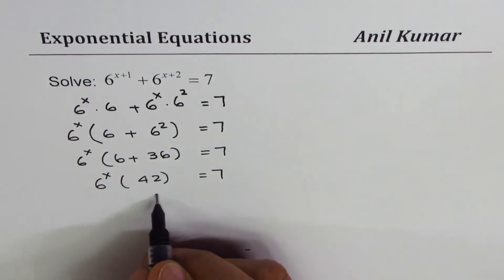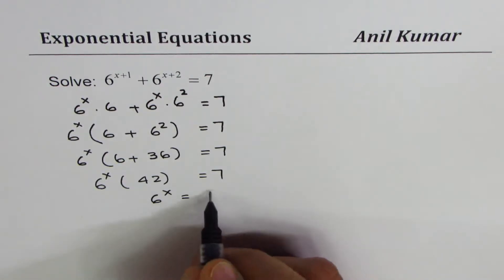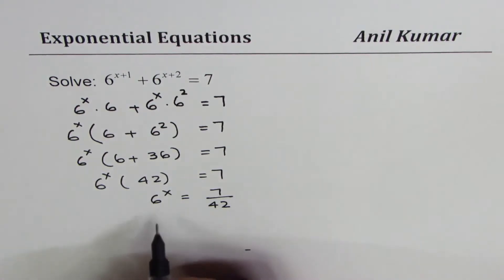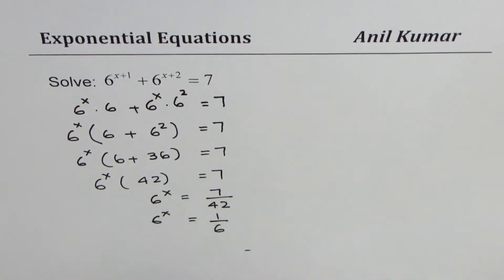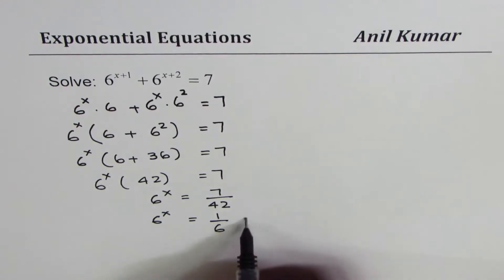Dividing by 42, we get 6^x = 7/42, which simplifies to 1/6. And 1/6 equals 6^(-1).